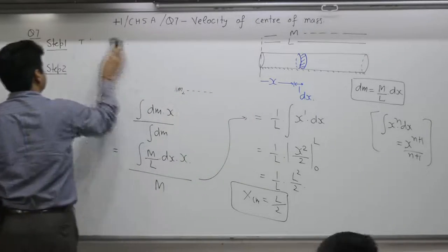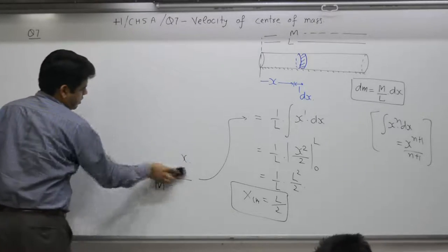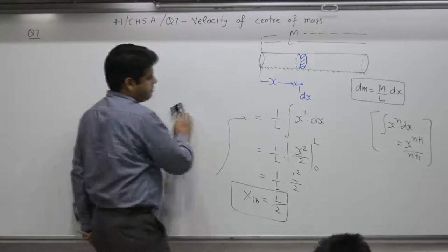First part is with the velocity of center of mass. Part A and B is with examples.